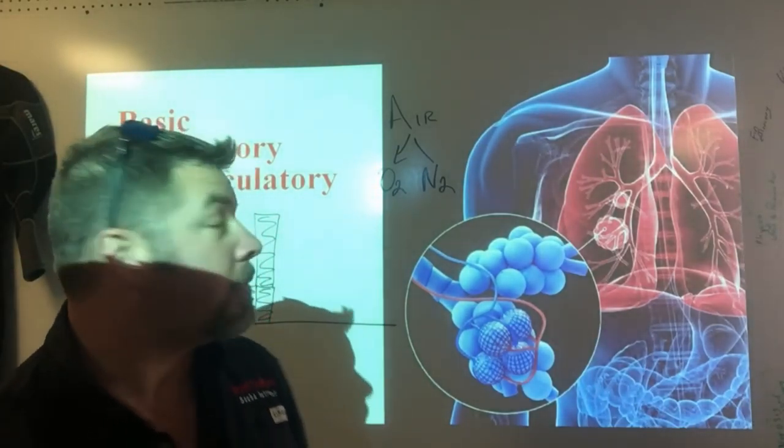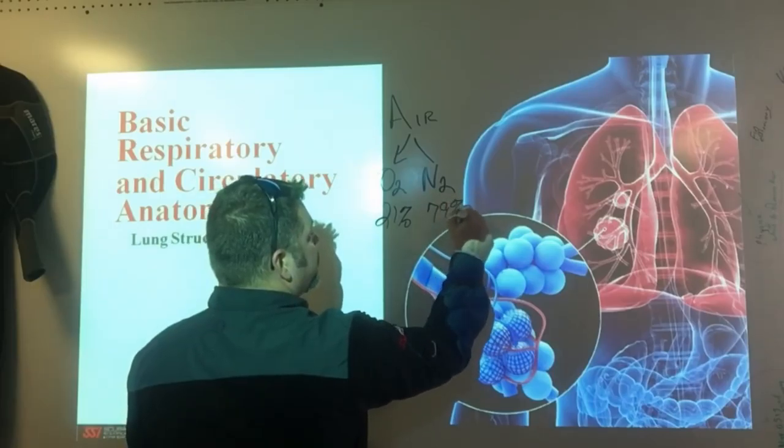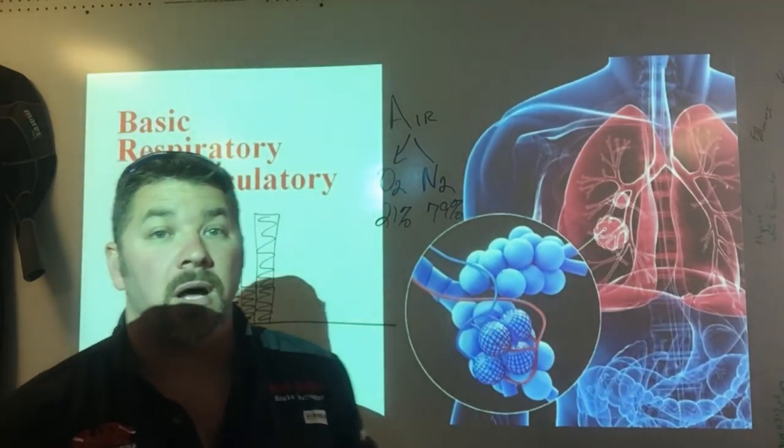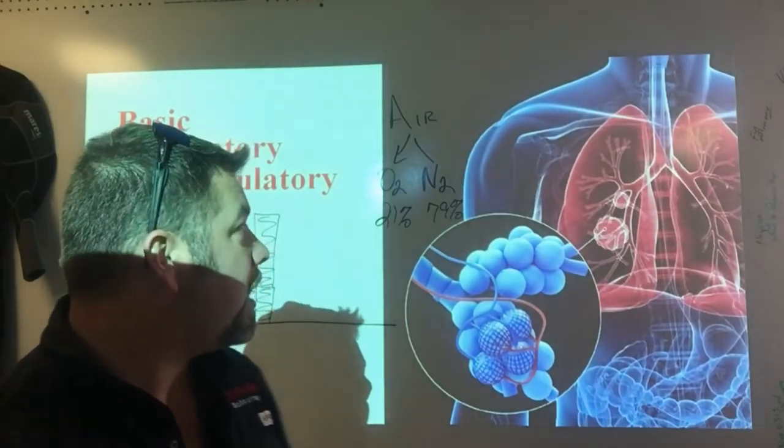Those percentages that we breathe are 21% oxygen and 79% nitrogen. And that's what we call Dalton's Law, or partial pressure. It's just a percentage of the gas that we breathe and how it affects our body.